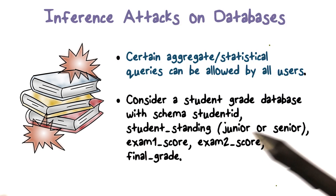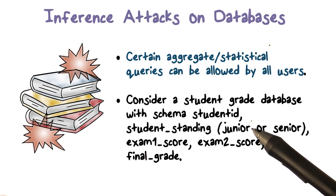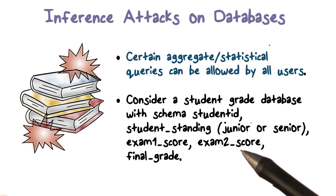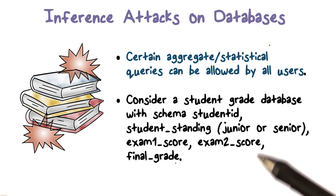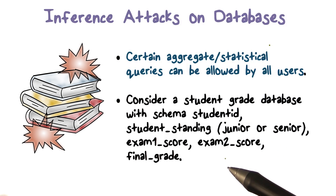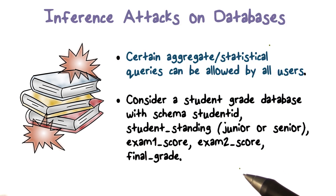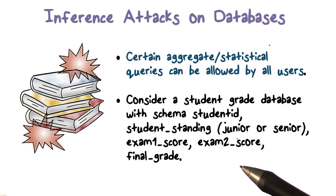The tuple, if you look at it, is going to have a student ID, either junior or senior for their standing, the two exams, and the final grade. So if we consider this database where we have a tuple for each student in the class, what kind of query can you allow on it — which any user should be allowed to submit and get the result from?